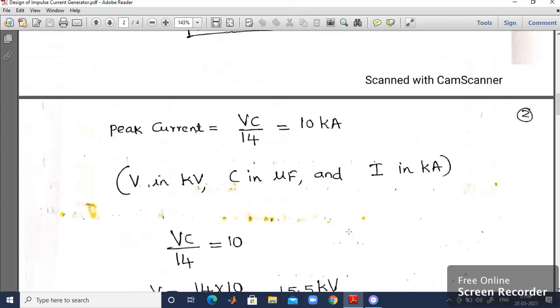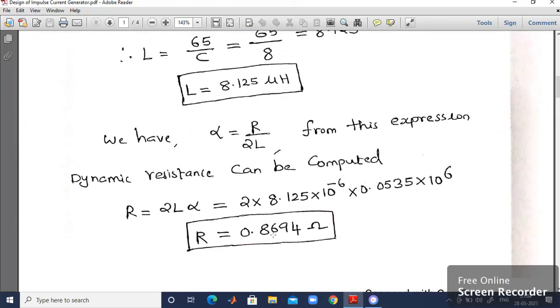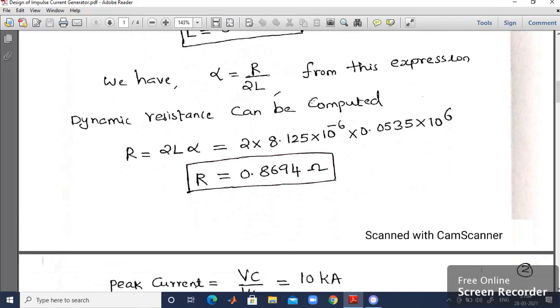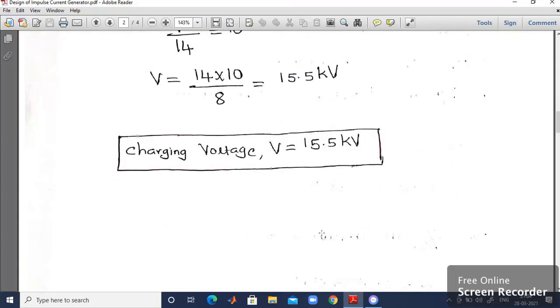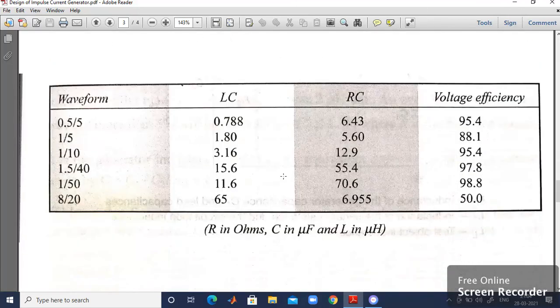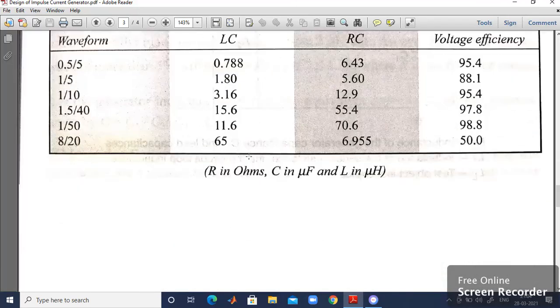The design parameters are: Number one, R is equal to 0.8694 ohm. Then value of L equal to 8.125 microhenry. And finally, the charging voltage of that particular generator is given by 15.5 kV. So these are the parameters which we have obtained.